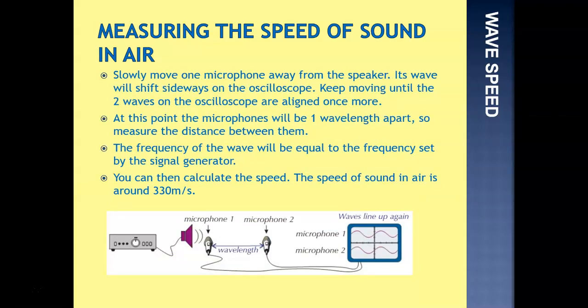Slowly move one microphone away from the speaker. You'll see on the oscilloscope that its wave will shift sideways. Keep moving, and keep moving it, until the two waves on the oscilloscope are the same again, the same peaks, the same troughs. At this point, the microphones will be one wavelength apart, so what we'd do is measure the distance between them. That would give us the wavelength, the distance between both of those microphones.